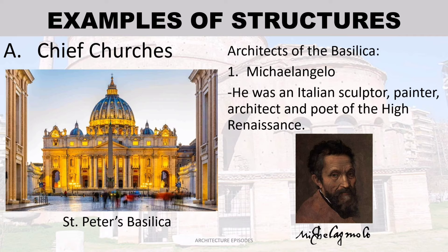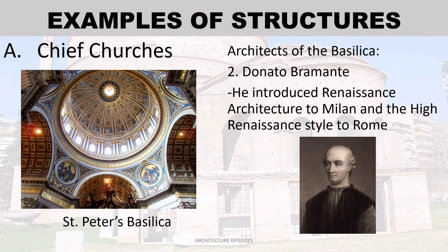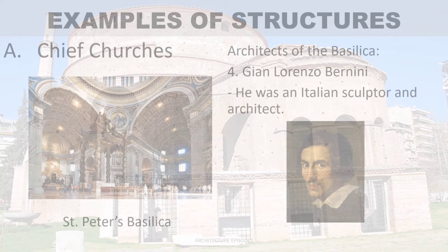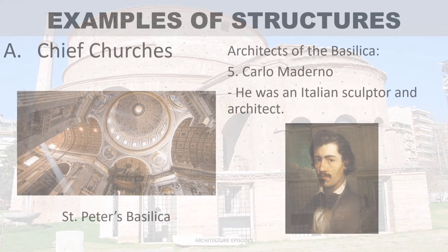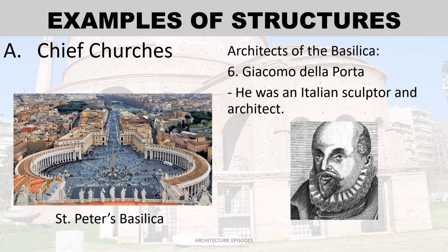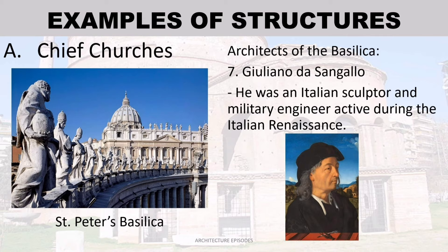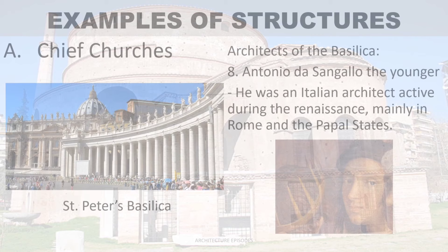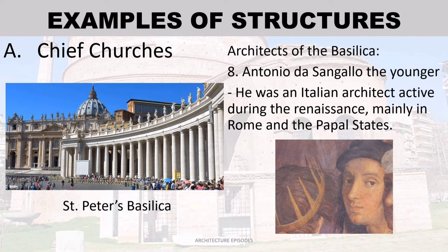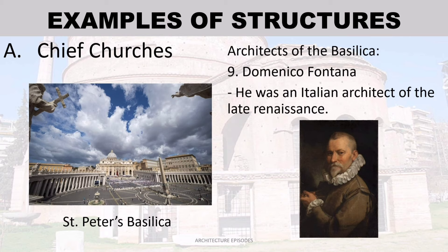Architects of the basilica: Michelangelo — an Italian sculptor, painter, architect, and poet of the High Renaissance. Donato Bramante — he introduced Renaissance architecture to Milan and the High Renaissance style to Rome. Rafael — an Italian architect of the Italian Renaissance. Giuliano — an Italian sculptor and military engineer active during the Italian Renaissance. Antonio da Sangallo the Younger — an Italian architect active during the Renaissance, mainly in Rome and the Papal States. Domenico Fontana — an Italian architect of the Late Renaissance.